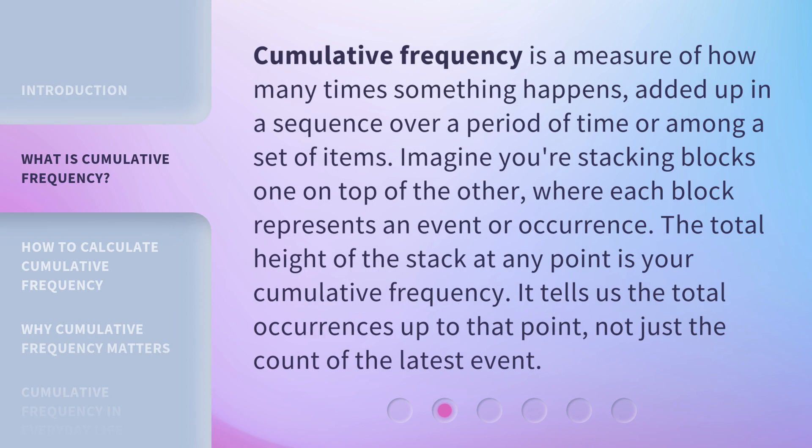Cumulative Frequency is a measure of how many times something happens, added up in a sequence over a period of time or among a set of items. Imagine you're stacking blocks one on top of the other, where each block represents an event or occurrence. The total height of the stack at any point is your cumulative frequency. It tells us the total occurrences up to that point, not just the count of the latest event.